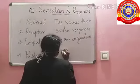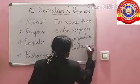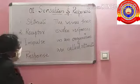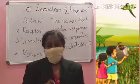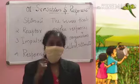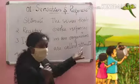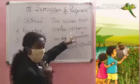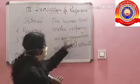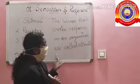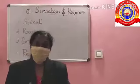Are called stimuli. Look at the picture here — the boy makes a sound, and hearing the sound, the parrot flew away. Here the stimuli is the sound, and the response is it flew away. Once again: the senses that evoke responses in an organism are called stimuli.